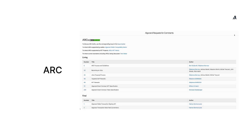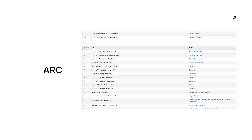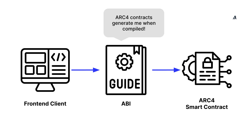Algorand Requests for Comments, or ARC. It's a series of standards for how to do certain things on the Algorand blockchain. ARC4 is a convention that defines a set of encodings and behaviors for writing and interacting with an Algorand smart contract. In other words, it's a contract standard that makes it easier for the user-facing interface to interact with Algorand smart contracts.